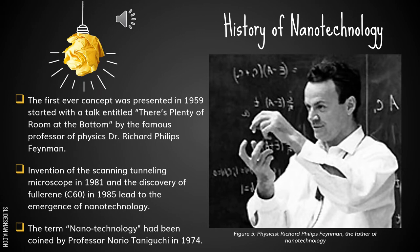The history of nanotechnology: the first ever concept was presented in 1959 in a talk titled 'There is Plenty of Room at the Bottom' by the famous professor of physics, Dr. Richard Philip Feynman. The invention of the scanning tunneling microscope in 1981 and the discovery of fullerene C60 in 1985 led to the emergence of nanotechnology. The term nanotechnology had been coined by Professor Norio Taniguchi in 1974.